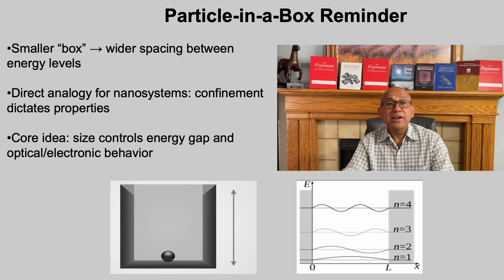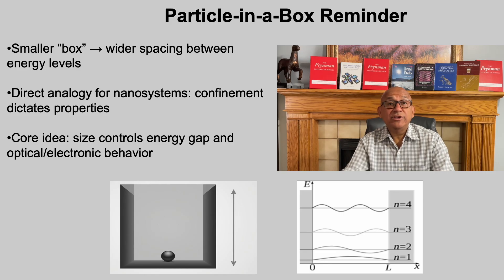Let us recall the particle in a box model from our last lecture. When a particle is confined, its allowed energy levels are no longer continuous — they are quantized — and the smaller the box, the farther apart these energy levels become. This model captures the essence of nanoscale physics. When materials are reduced to nanometer sizes, confinement directly controls their energy gaps. That is why shrinking a nanoparticle can change its color or conductivity. The particle in a box is not just a toy model; it is a direct analogy for real nanomaterials.